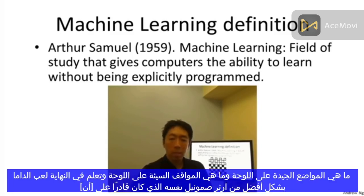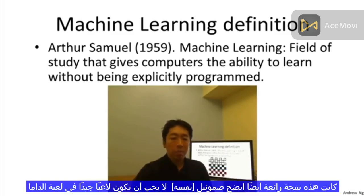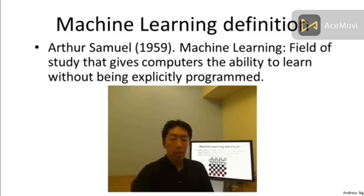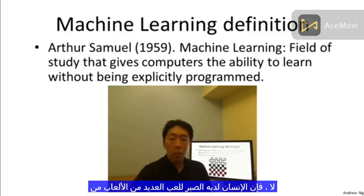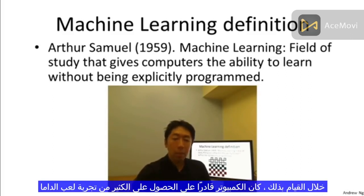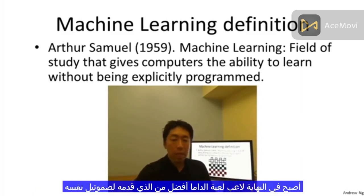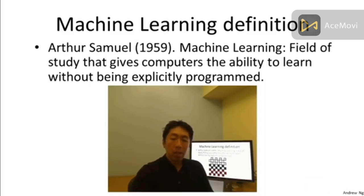And eventually it learned to play checkers better than Arthur Samuel himself was able to. This was a remarkable result. Arthur Samuel himself turned out not to be a very good checkers player, but because the computer has the patience to play tens of thousands of games against itself — no human has the patience to play that many games — the computer was able to get so much checkers playing experience that it eventually became a better checkers player than Arthur Samuel himself. This is somewhat an informal and older definition.